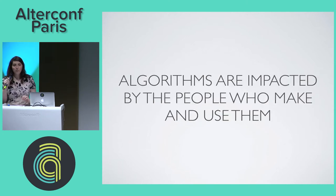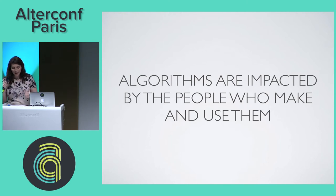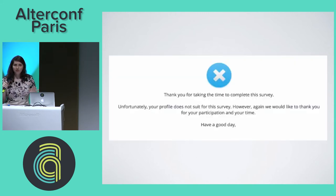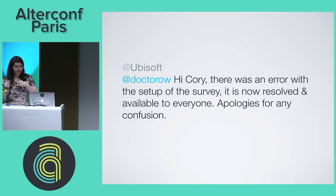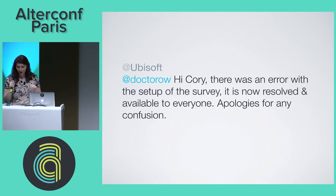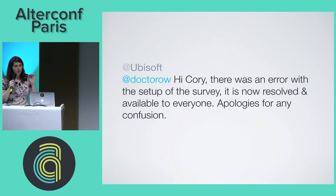Algorithms are impacted by the people who make them and the people who use them. On July 5th, 2016, Ubisoft published a gamer survey for their players. Because gender is not an issue for Ubisoft at all, the first question they asked was: are you male or female? And if you picked female, the survey would stop. Of course there was a backlash. Cory Doctorow tweeted them, and they said: 'There was an error with the setup of the survey, it is now resolved and available to everyone. Apologies for any confusion.' I like the term 'confusion.' They didn't test because they are not known for having bias. What that says about our biases as digital product designers is: as long as we don't own it, it will keep on happening.